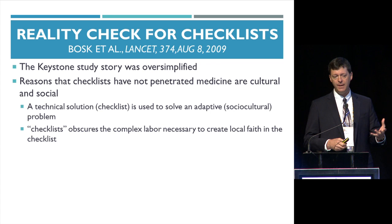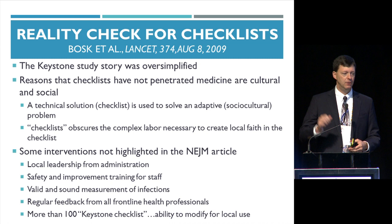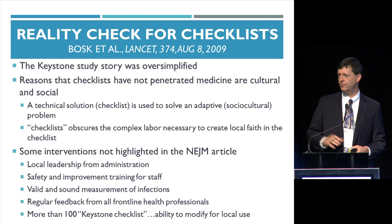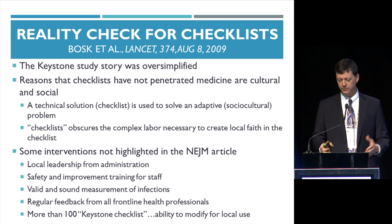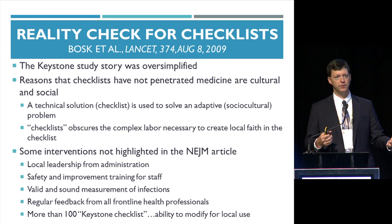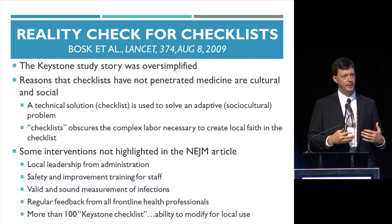They say there were five things they didn't really talk about in their article: local leadership from administration; safety and improvement training; sound measurement for infections — Peter Pronovost is passionate about getting measurement right to make improvement more effective; feedback from all frontline professionals; and there wasn't one checklist — there were more than a hundred checklists. The ability to modify for local use was key. If you send an article to the New England Journal saying your intervention was really a hundred different interventions that everyone modified, it's not going to be looked at as favorably as the science. But this is the important stuff if you're on the front lines.